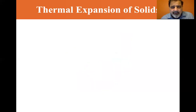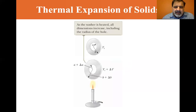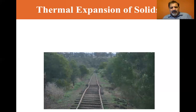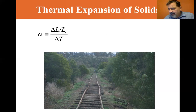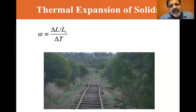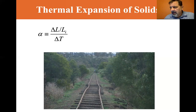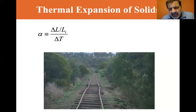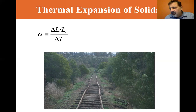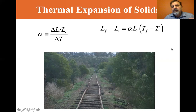Alpha is the average coefficient of linear expansion: delta-L over L-initial — whatever the initial length was — divided by delta-T. The delta-T here, since it's a relative change, can be expressed in Kelvin or Celsius; you don't need the absolute value. Delta-L is the change in length and delta-T is the change in degrees. Alpha is expressed in inverse degrees Celsius.